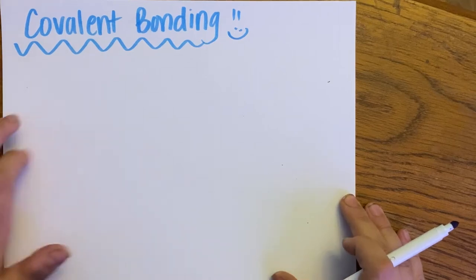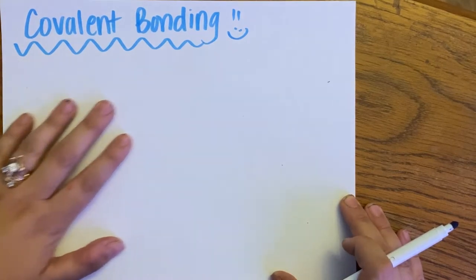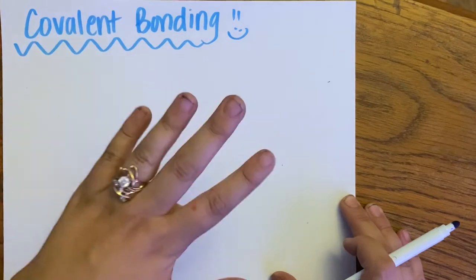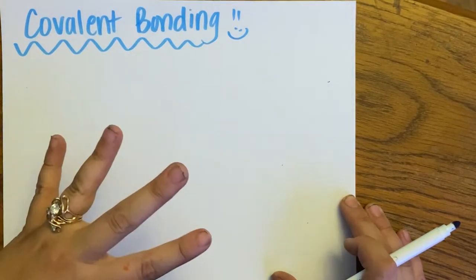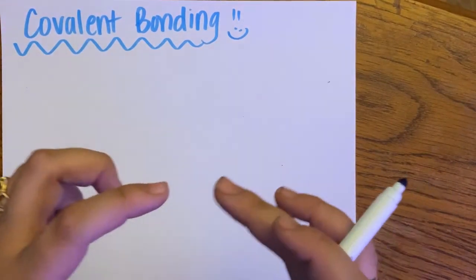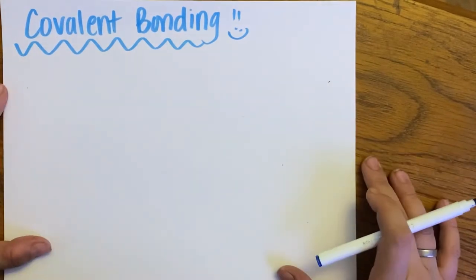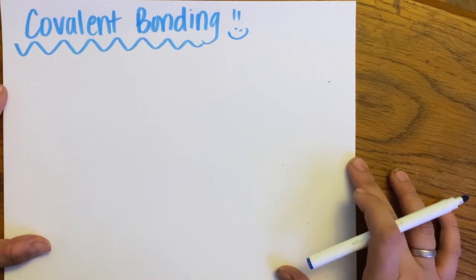In this video, we're going to be going over covalent bonding — just the basic concept of what it is, and then four easy rules for actually making your Lewis dot structures of covalent bonding so that you get all of your covalent structures correct.